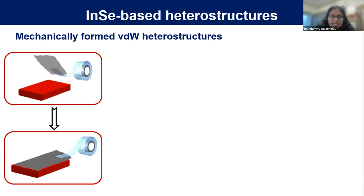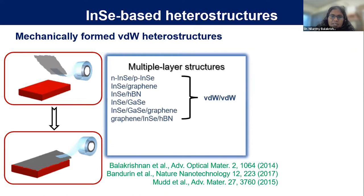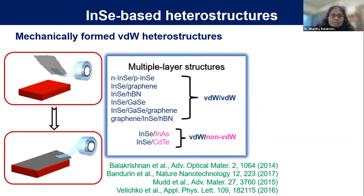Given these fantastic properties, we are interested in making heterostructures by mechanically exfoliating layers and stacking them with different materials. We studied many different heterostructures — for example, n-type indium selenide with p-type indium selenide, indium selenide with graphene, indium selenide with boron nitride, and so on, totaling around 12 van der Waals heterostructures. We also studied non-van-der-Waals material heterostructures, for example indium selenide with indium arsenide and indium selenide with cadmium telluride.